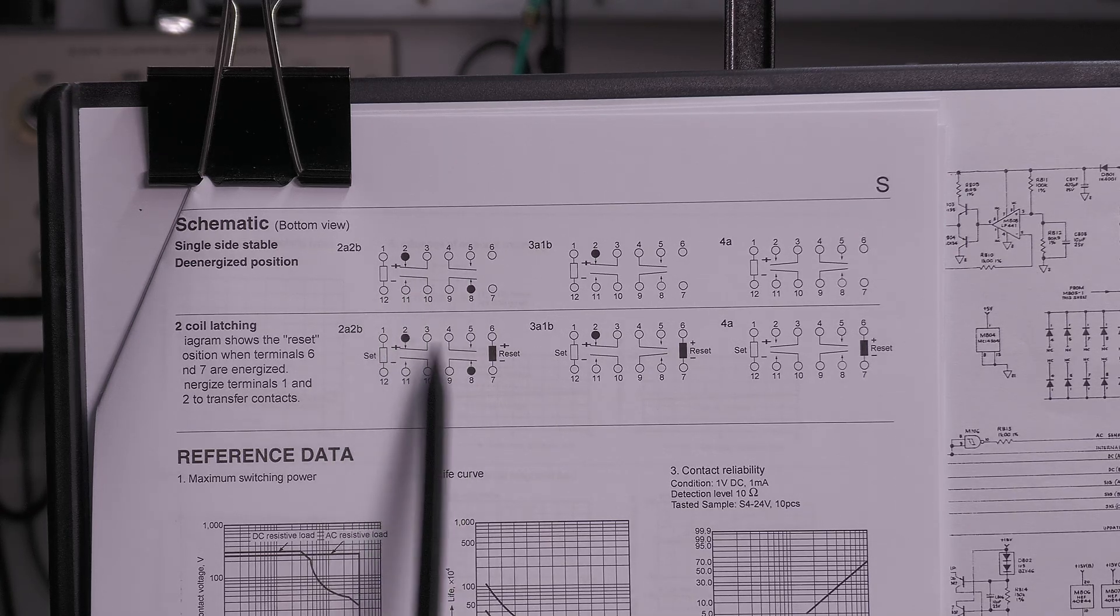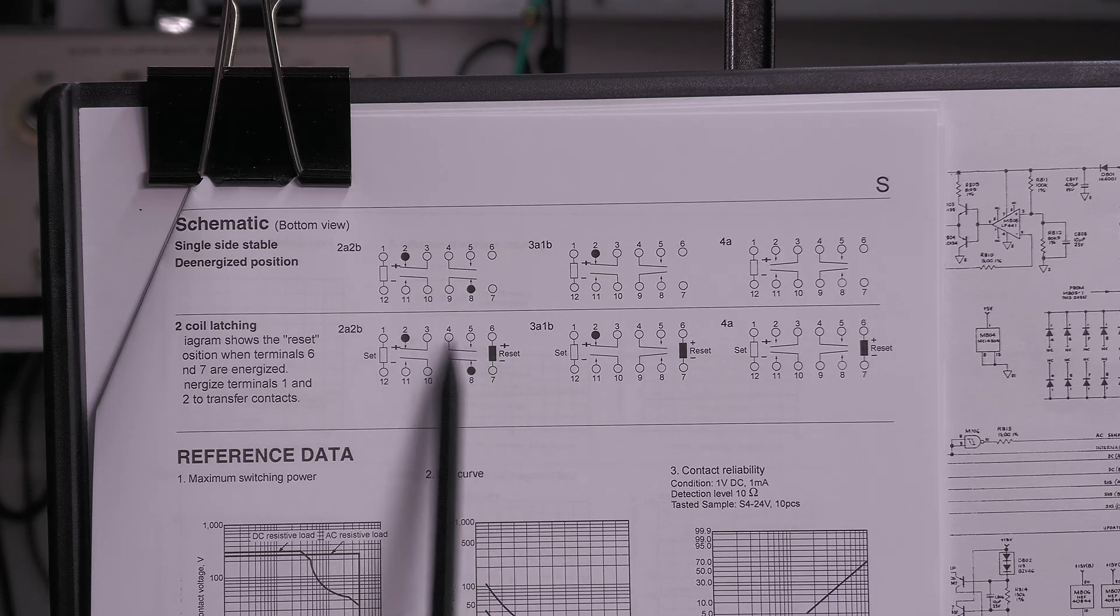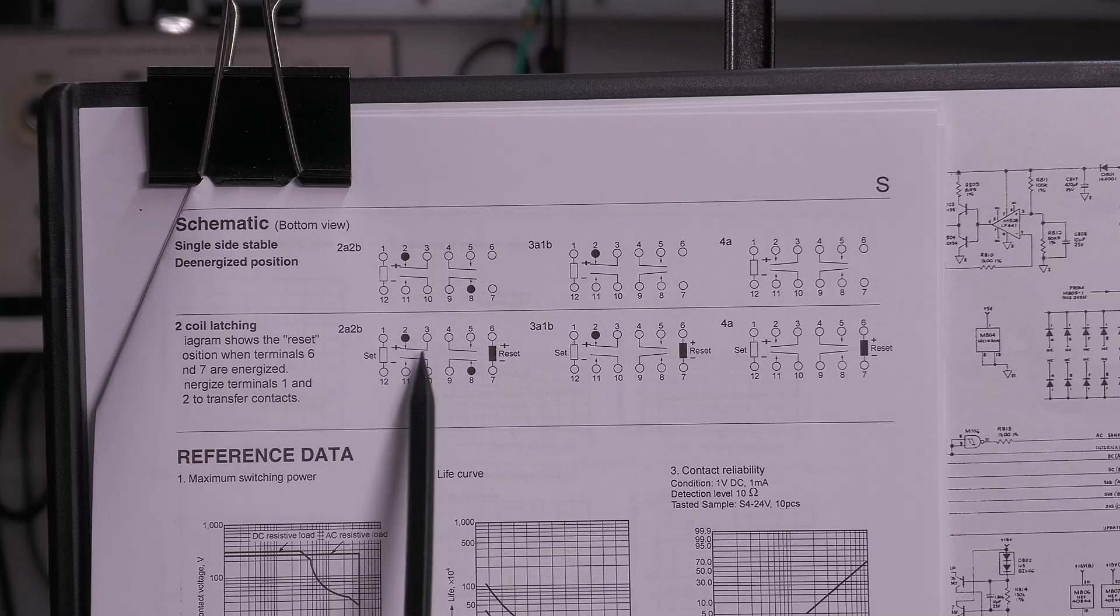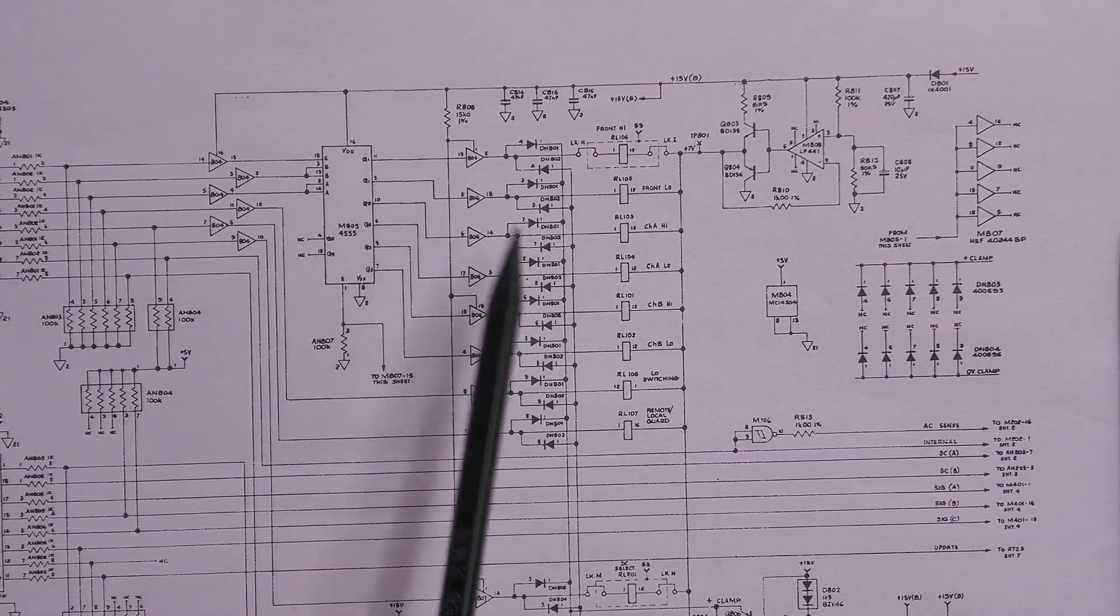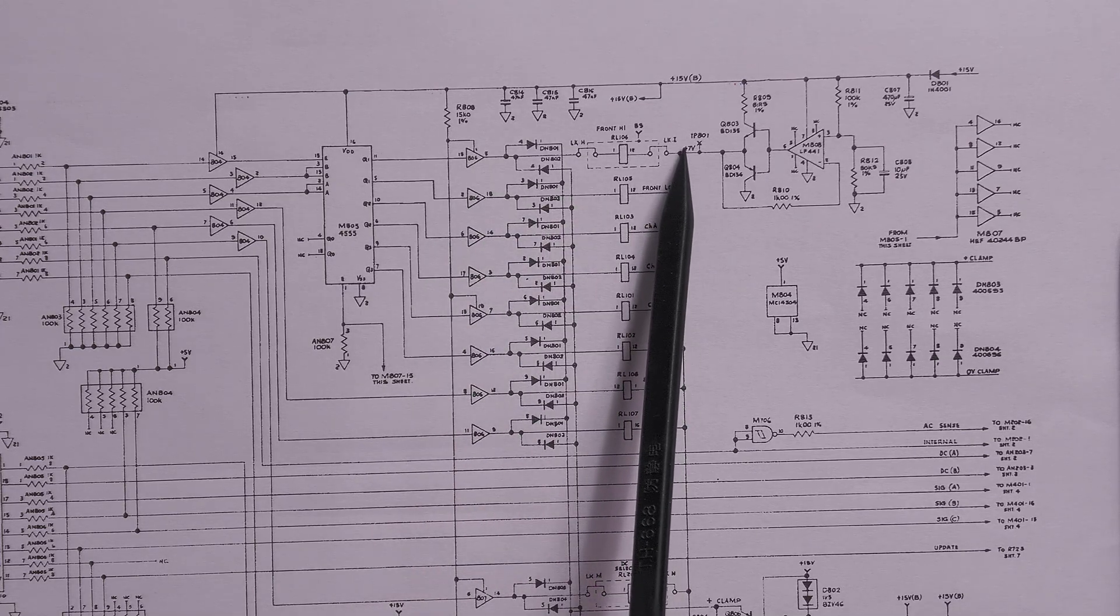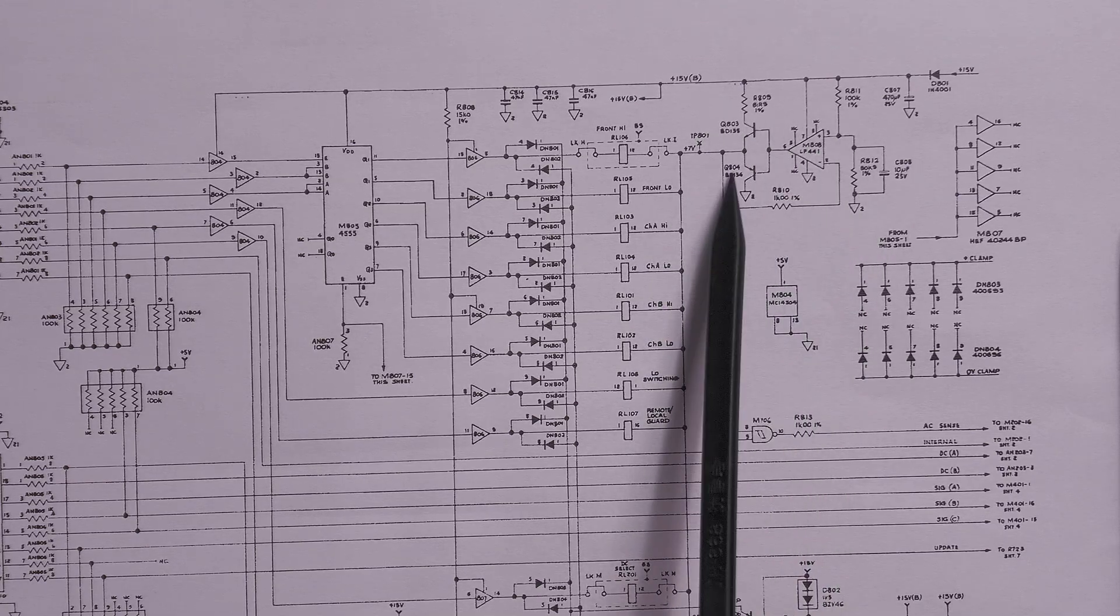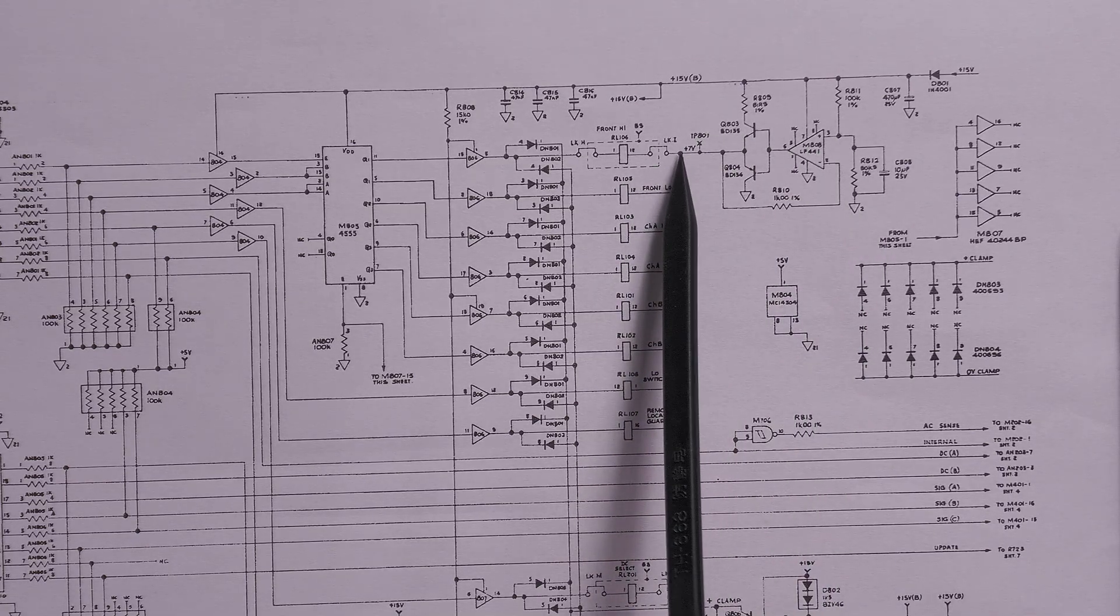But on the dual coil relays you don't need to do that. You just have two independent coils for setting and unsetting the contacts. Here on the schematic diagram from the last video, you can see how that's taken place. I mentioned this 7 volts here that's generated by this standalone op-amp circuit. It goes on to one side of all the relays.